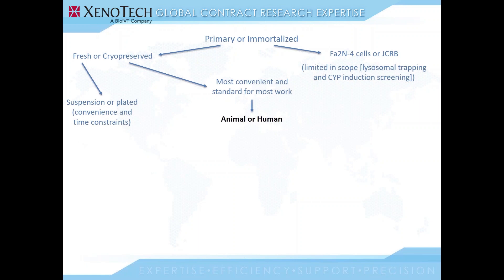The next thing you need to choose between is animal hepatocytes or human hepatocytes, and whether you need individual donor hepatocytes or pooled hepatocytes. This choice is really only relevant for human hepatocytes, as all small animal model hepatocytes come standard as pools. Basically, unless you're doing experiments that require individual donors — like CYP induction assays, or examining the contribution of specific CYPs and their effects on an observed phenotype — pools will probably be most useful for your work.